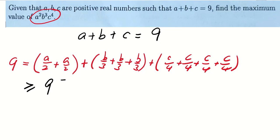This will be greater than or equals to 9 times the product to the power of 1 over 9. And the product is A over 2 squared times B over 3 power 3 times C over 4 power 4.